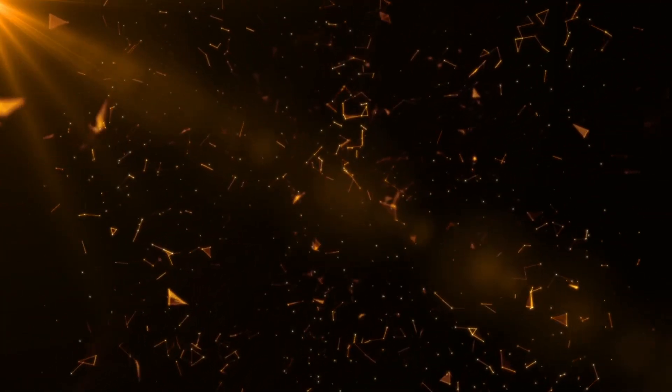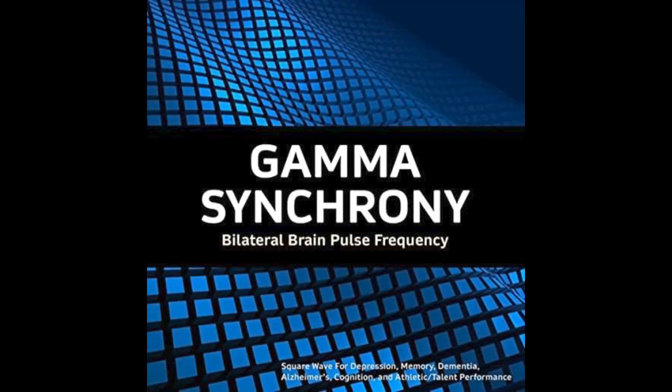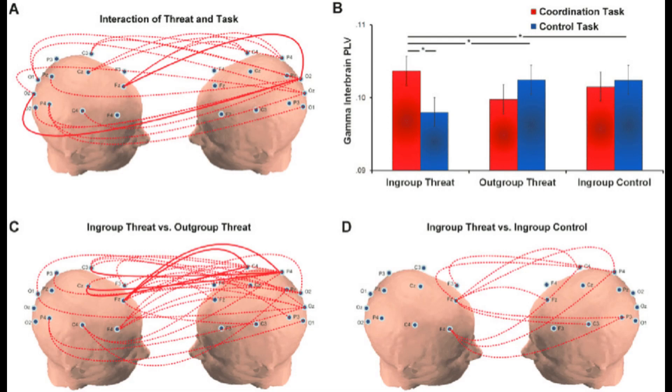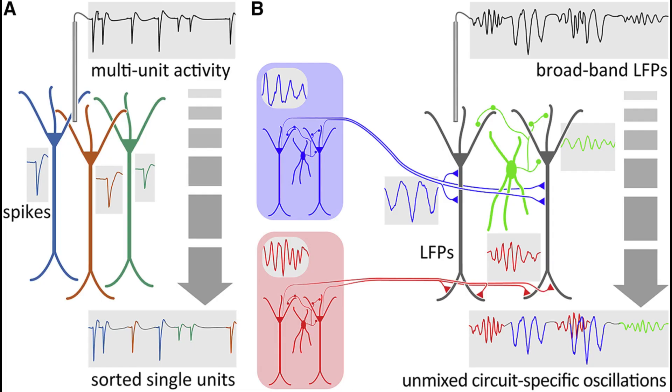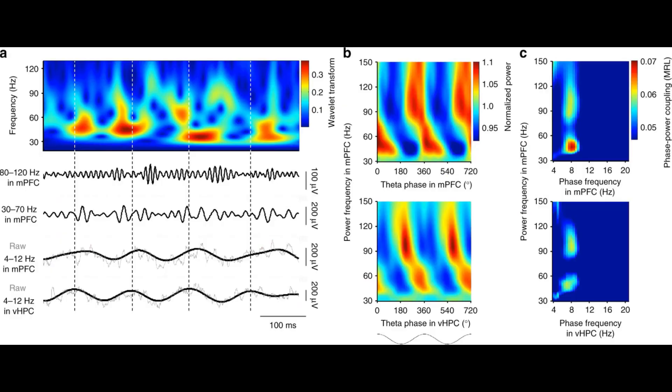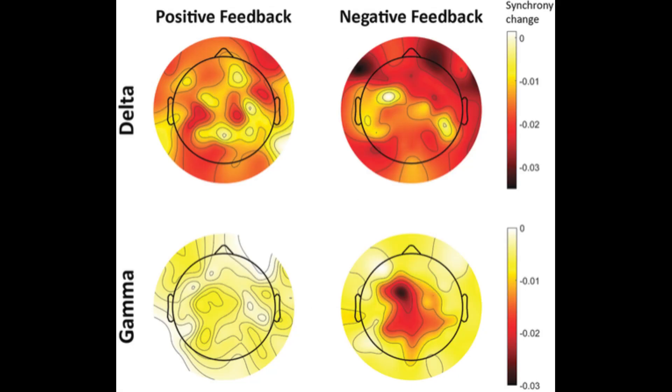Gamma synchrony, particularly 40 Hz coherence in the brain, has been strongly associated with a variety of cognitive functions closely tied to consciousness. This synchrony is observed during tasks related to attention, visual recognition, linguistic recognition, working memory, and even dreaming.